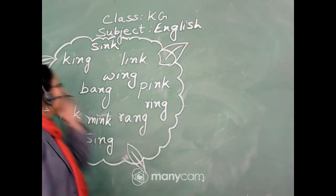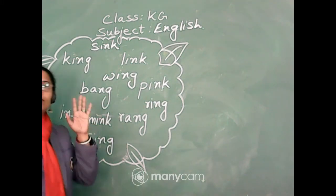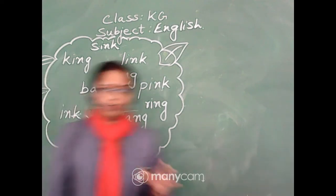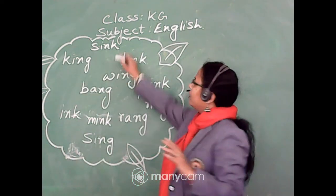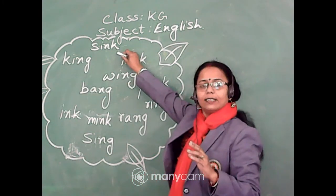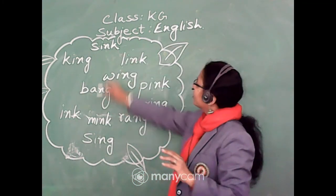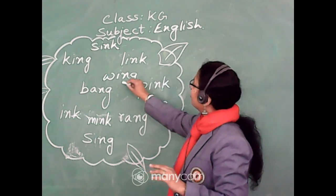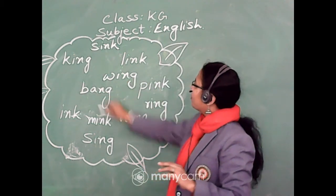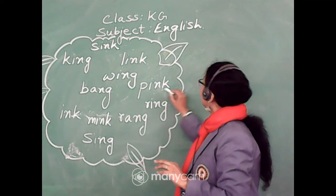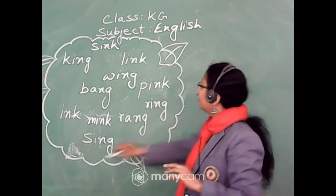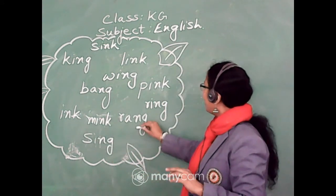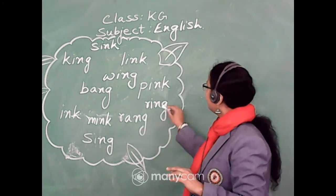So here you can see, first of all I am going to read the sounds for all of you. The first sound is sink, king, link, wing, bank, pink, ink, mink, rang, ring.